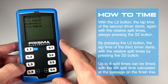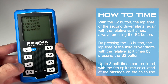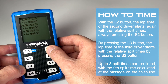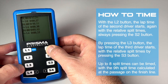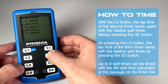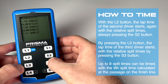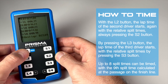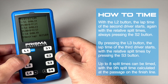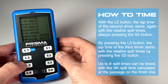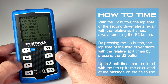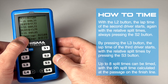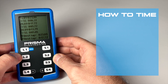With the L2 button, the lap time of the second driver starts, again with the relative split times by pressing the S2 button. By pressing the L3 button, the lap time of the third driver starts, with the relative split times by pressing the S3 button. Up to eight split times can be timed, with the ninth split time calculated at the passage on the finish line.